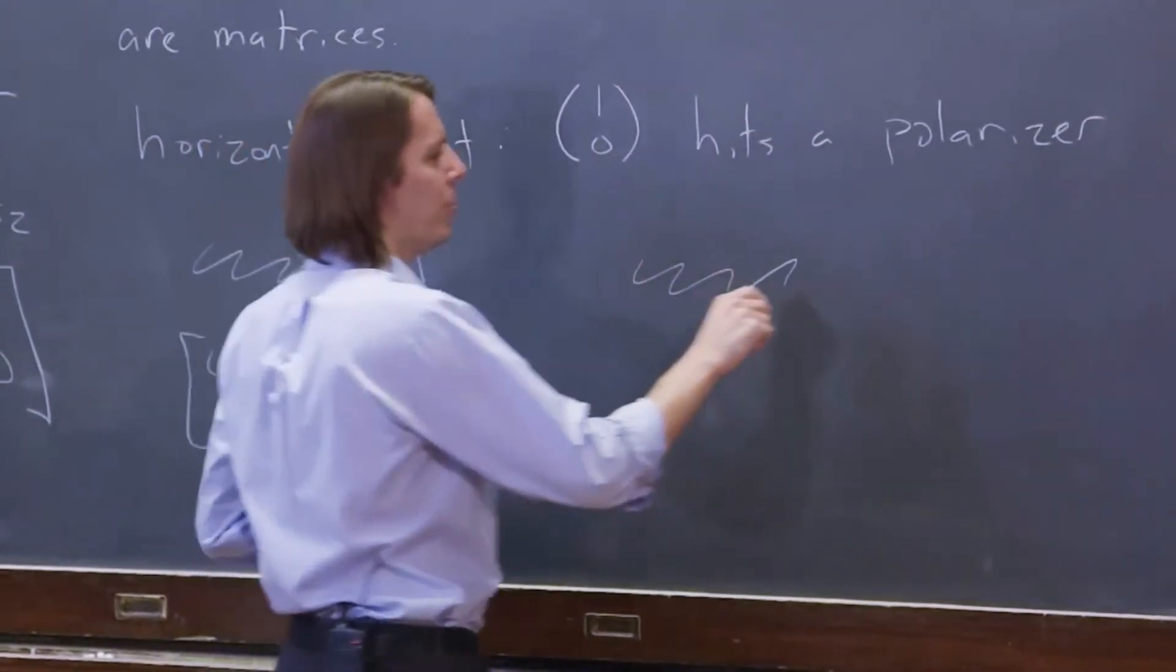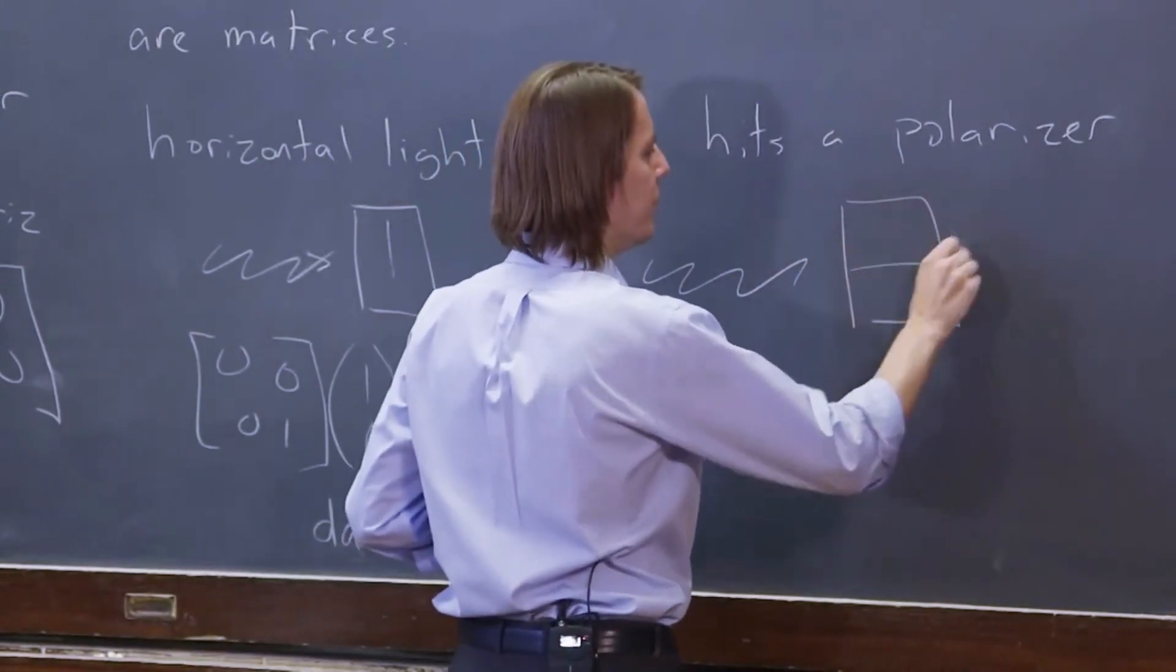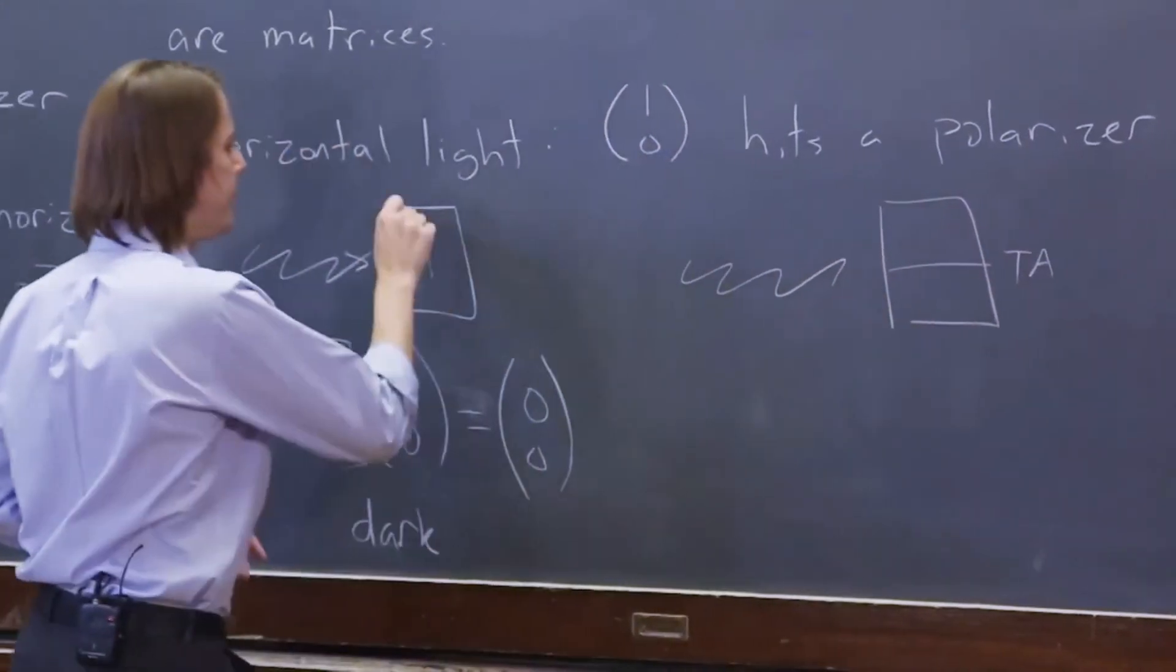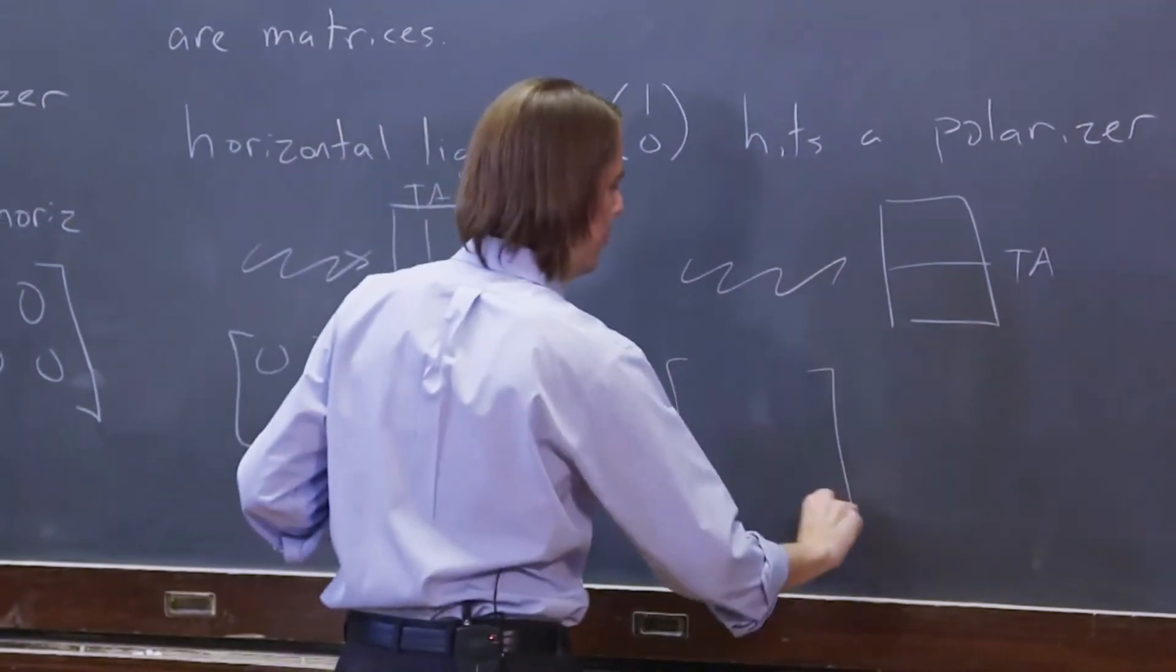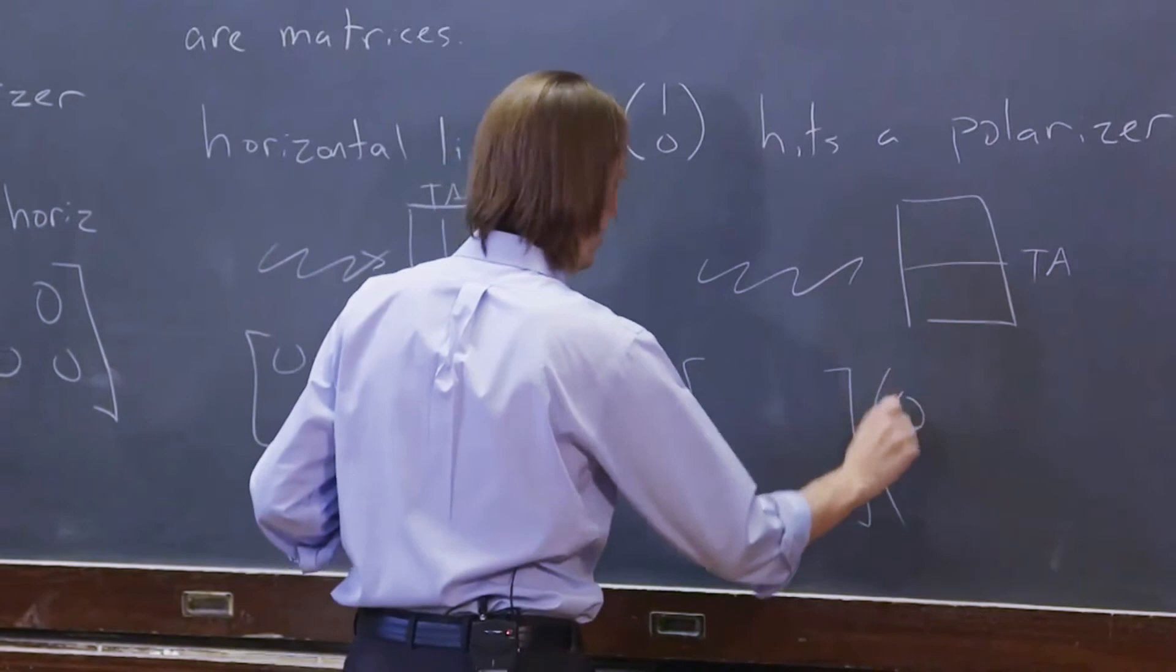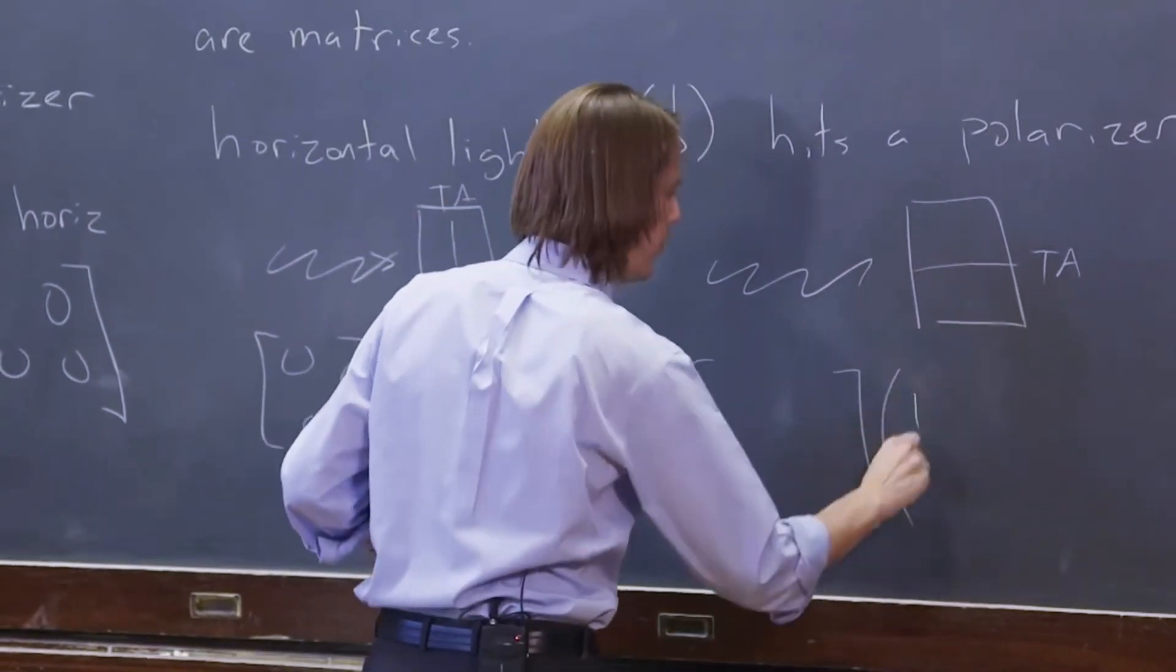Now let's do the other case. Horizontally polarized light and a polarizer with its TA that way. Then we take the matrix times the light. So 1, 0, horizontal over vertical.